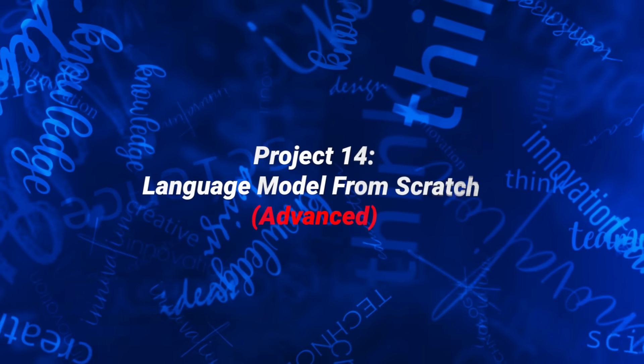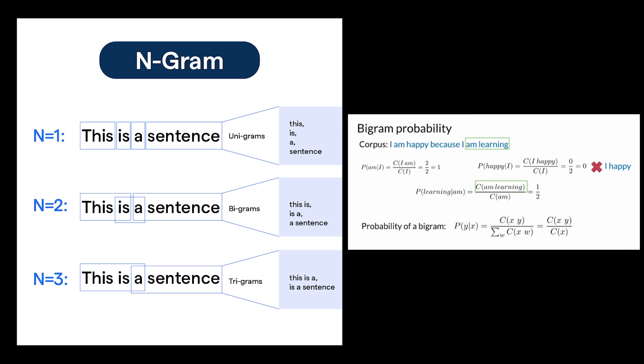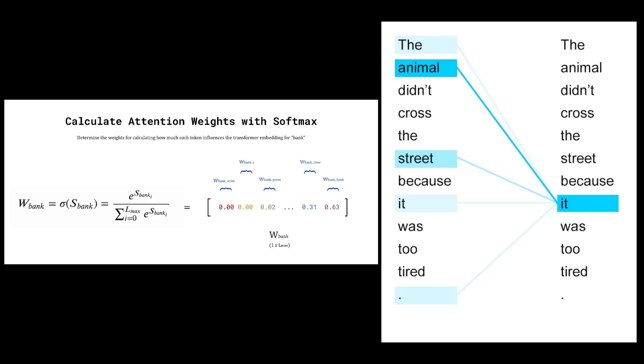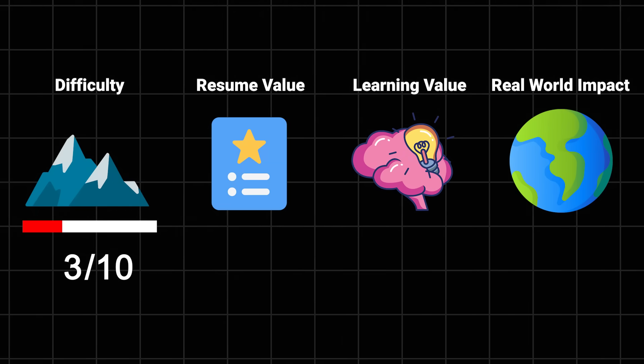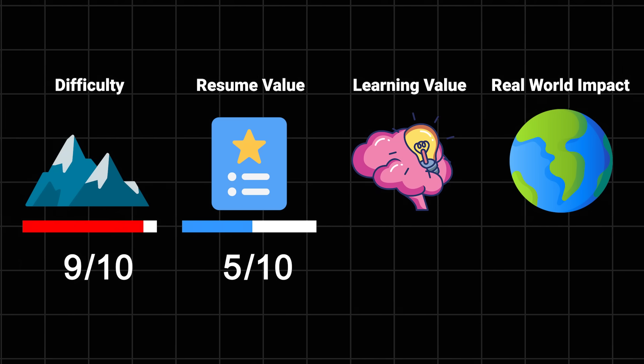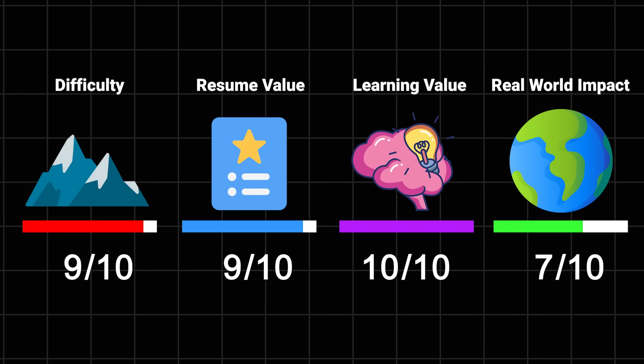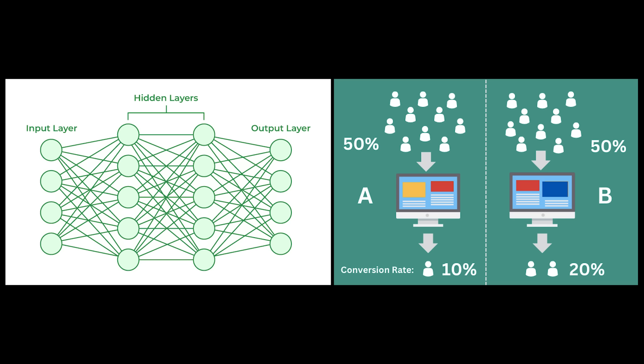Language model from scratch. No, we're not building the next GPT yet, but we are going to create something that understands text, starting from simple n-grams all the way to a basic transformer architecture. The best part: after this, you'll actually understand those transformer architecture diagrams instead of just nodding along pretending you do. Difficulty: 9 out of 10 - those attention mechanisms aren't going to implement themselves. Resume value: 9 out of 10. Learning value: 10 out of 10. And impact: 9 out of 10.